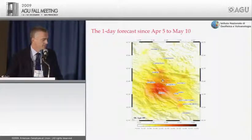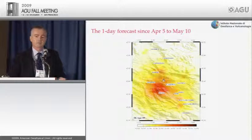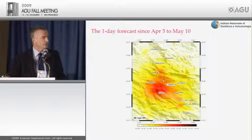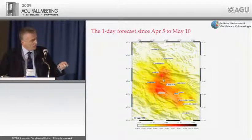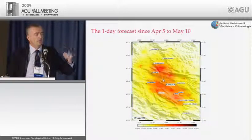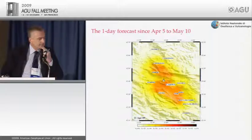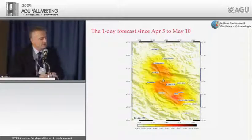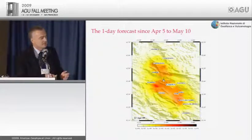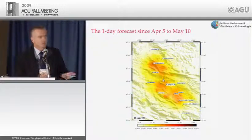In this movie, you see the probability map, and immediately after, blue dots represent earthquakes that really occurred. The map is time-dependent — the intensity of colors relates to the probability of occurrence. The basic point is that we were able to identify which regions were most dangerous on any given day.